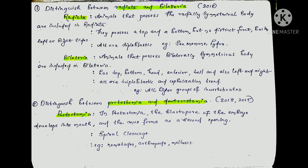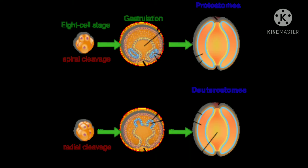The next question is: distinguish between Protostomy and Deuterostomy. In Protostomy, the blastopore of the embryo develops into the mouth, and the anus forms as the second opening. So in embryo development, the blastopore forms the mouth first, then the anus. This involves spiral cleavage. Examples: Nematodes, Arthropods, Mollusks. In Deuterostomy, the blastopore becomes the anus first, and the mouth forms as a second opening, involving radial cleavage.